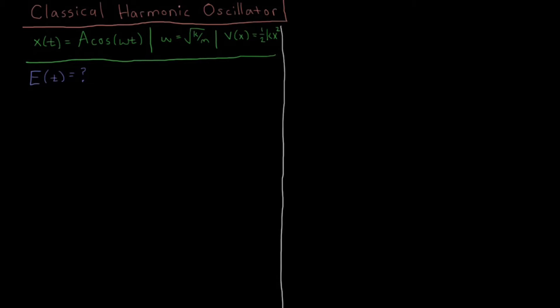In the previous video we showed that for the harmonic oscillator, if we give it an initial displacement of A with zero initial momentum, then we get this trajectory x(t) = A cos(ωt).